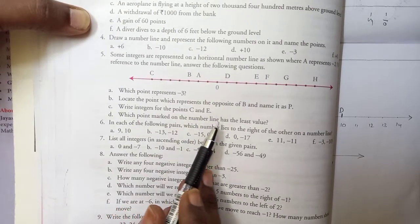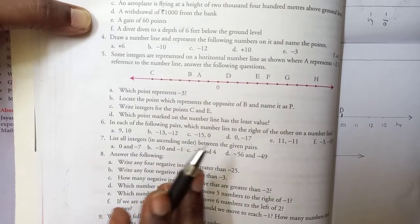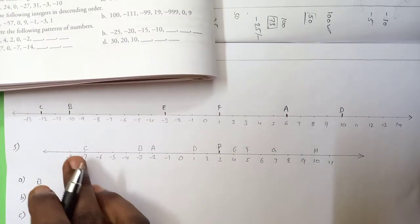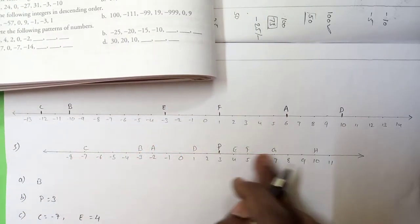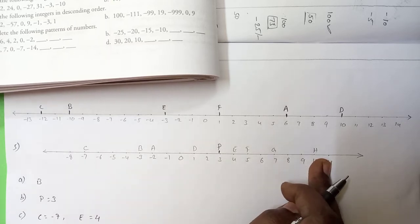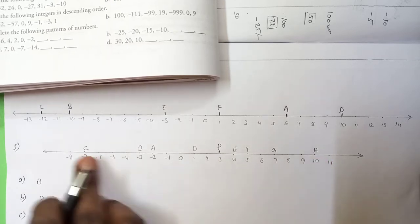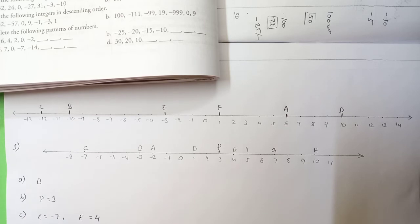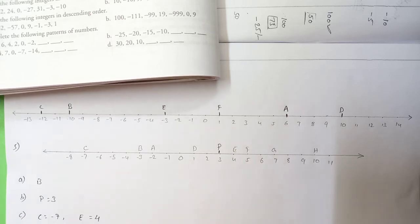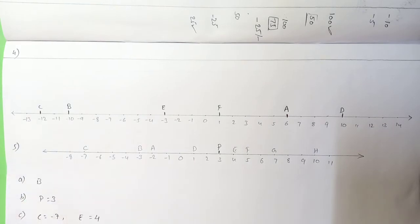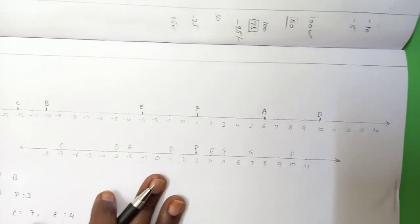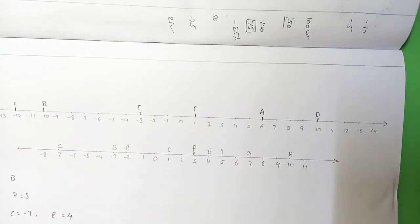Which point marked on the number line has the least value? They have mentioned many points — A, B, C, D, E, F, G, H. Which is having the least value? The answer is C. C is having minus 7. Actually, up to minus 8 is mentioned — whichever is the most negative value among all the points is the one we indicate.